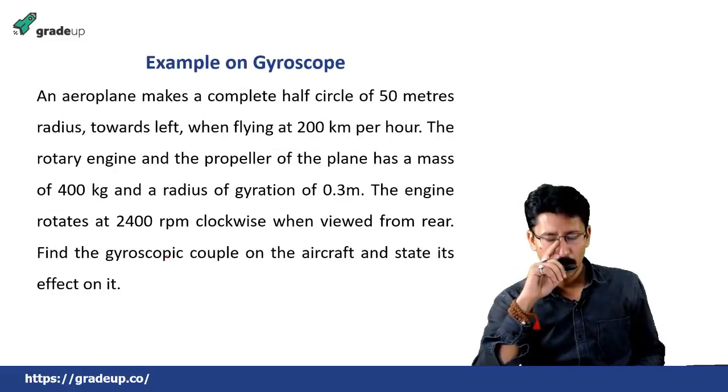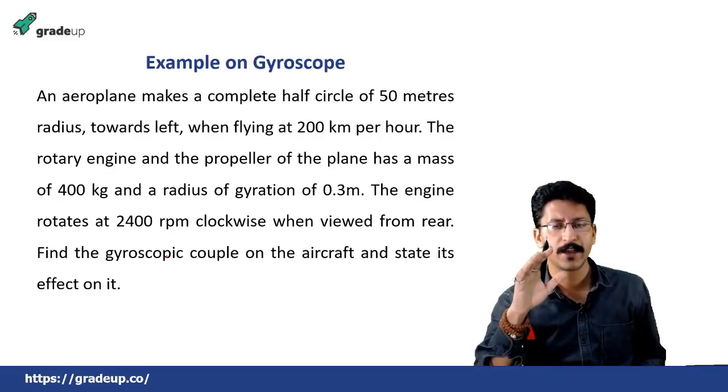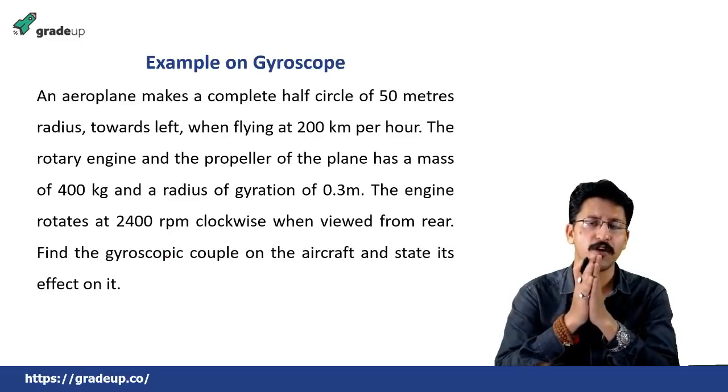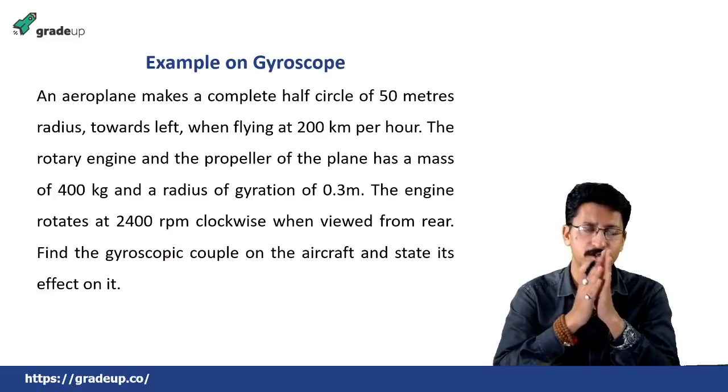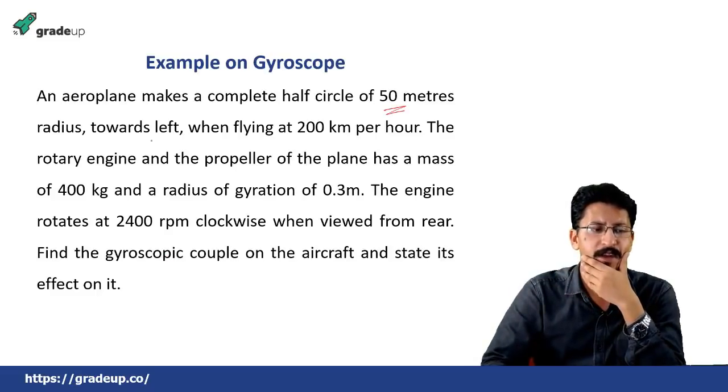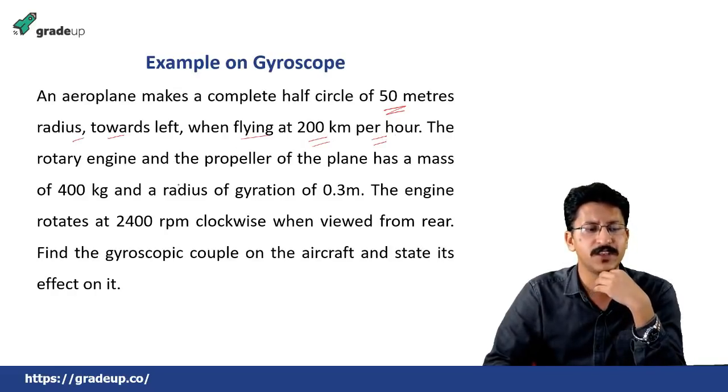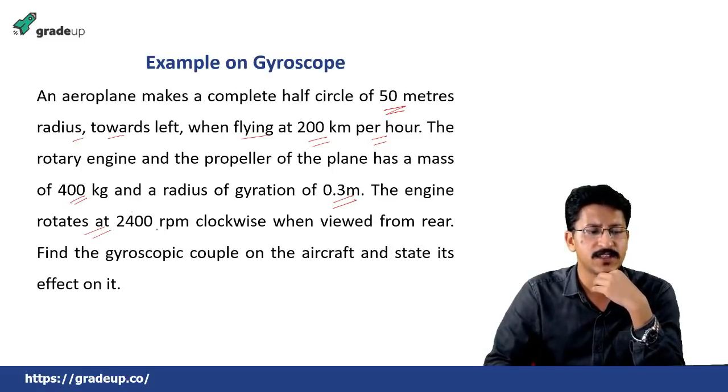Gyroscope, no question has been asked till now. So I have just taken an example to let you understand that how a question on gyroscope can be formed and how it is to be solved. So just see it. An aeroplane makes a complete half circle of 50 meters radius towards left when flying at 200 kilometers per hour. The rotary engine and the propeller of the engine has a mass of 400 kg and the radius of gyration is 0.3 meter. The engine rotates at 2400 rpm clockwise when viewed from the rear. Find the gyroscopic couple on the aircraft and state its effect on it.